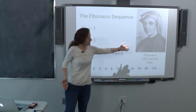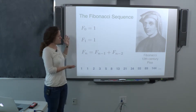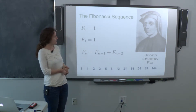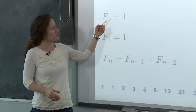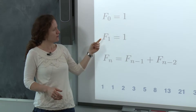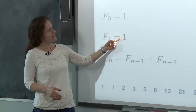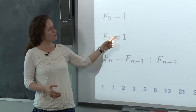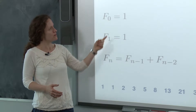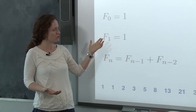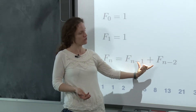Fibonacci, an Italian mathematician from the 12th century, was the first to write down the Fibonacci sequence. The sequence starts with two numbers: F sub 0, the very first entry, is 1, and F sub 1 is also 1. We generate the next number by adding the two previous ones together. In general, the formula for the nth Fibonacci number is just the sum of the previous two in the list.